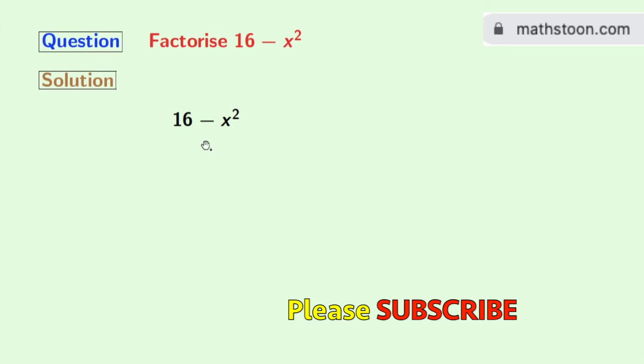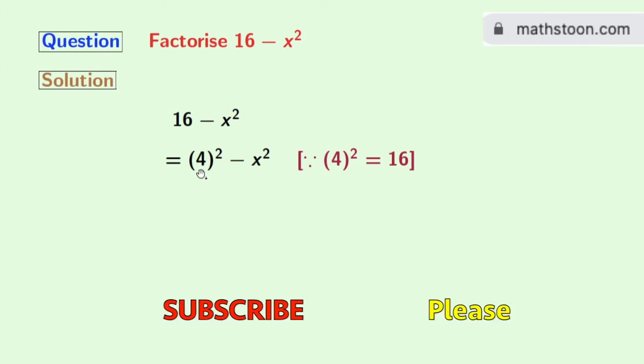Our given expression is 16 minus x squared. We will rewrite this as 4 squared minus x squared, as we know that 4 squared equals 16. This expression is in the form of a squared minus b squared, where a is 4 and b is x, so we will apply the formula.